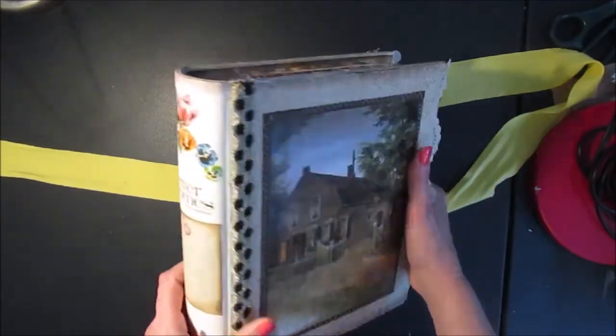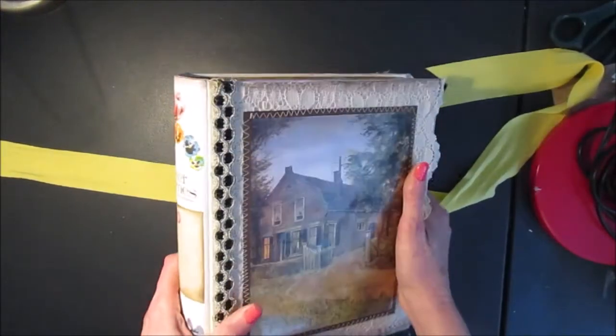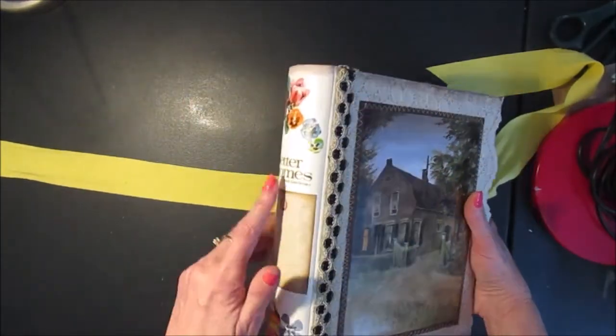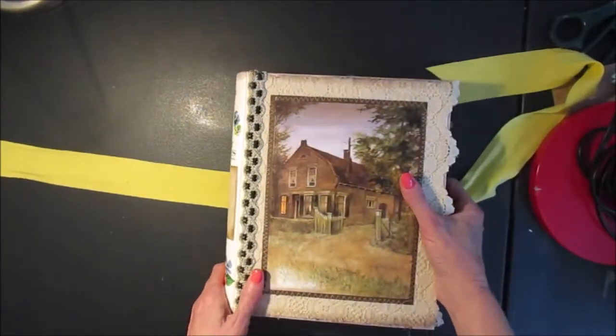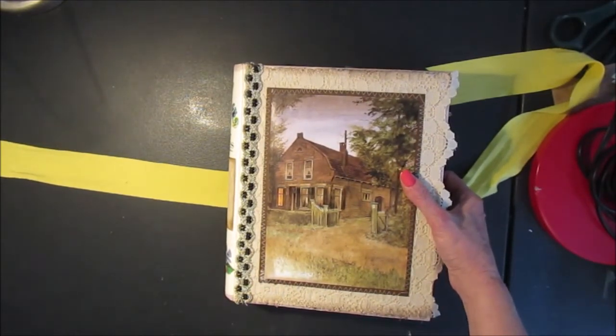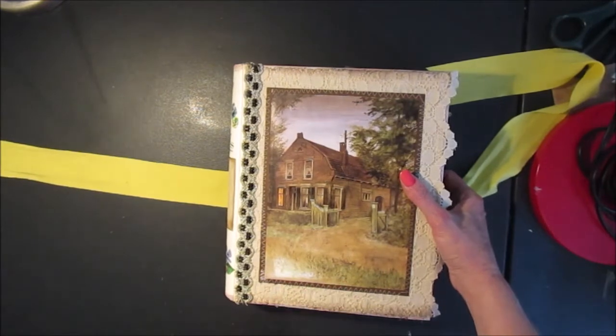And like I said, this binder came from a thrift shop. So if you have a look next time you're in there, I've seen lots of these Better Homes and Gardens old style binders. So you can probably pick one up for not too much money and make yourself a nice journal.